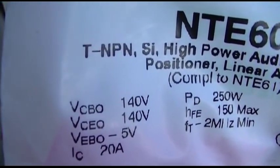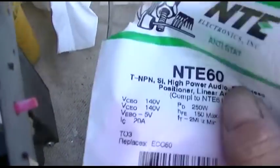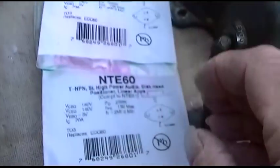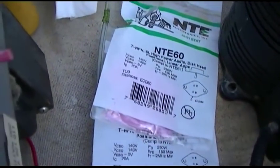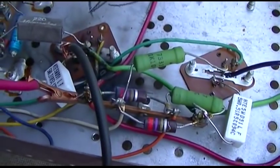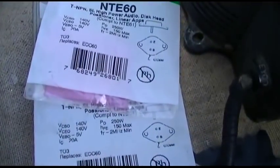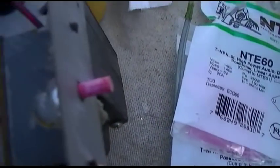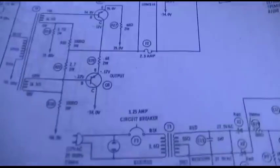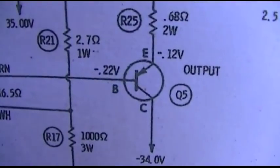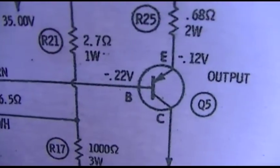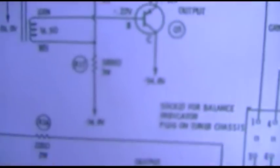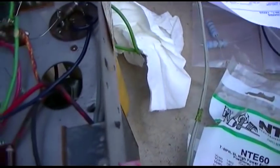NPN. And I need PNP, so I need the complement, the NTE 61. I don't know why the guy at the electronics store gave me the wrong thing. It must have just been an accident. So I got to get some PNP transistors. The little arrow pointing in means PNP. If it was pointing out, it would be NPN. It's kind of irritating.